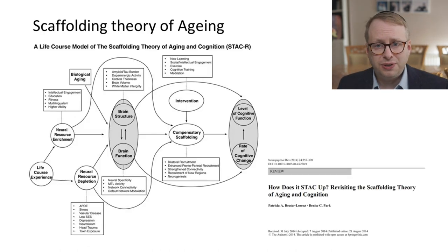This brings us very neatly onto the scaffolding theory of aging, which takes into account the entire life course of our existence. So we are who we are in terms of how we are born, our genes, our immediate environment in terms of nutrition, safety, education, cultural experiences, which can all act as resources of neural enrichment. And of course, there are aspects as well which can be negative in terms of toxin exposures, head traumas, stresses and depression and so on, which can act as neuronal resource depletion.